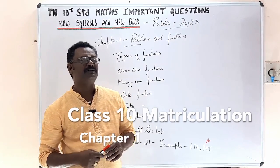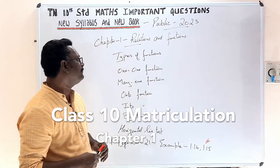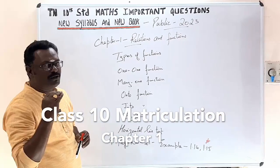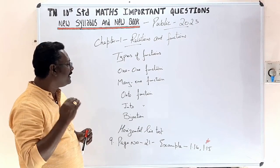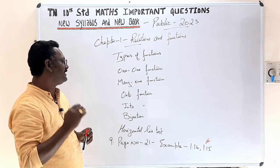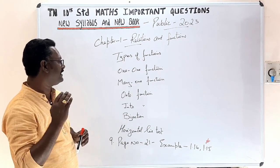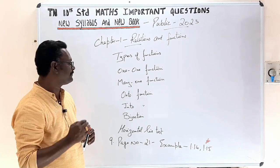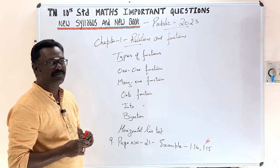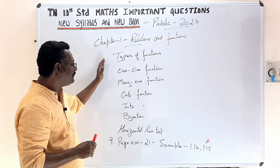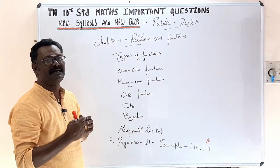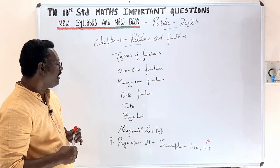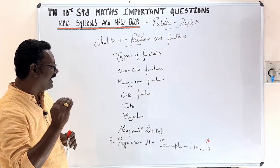In the first chapter, let's look at the types of functions: one-to-one function, many-one function, onto function, into function, and bijection. These are your definitions. Also look at the horizontal line test.